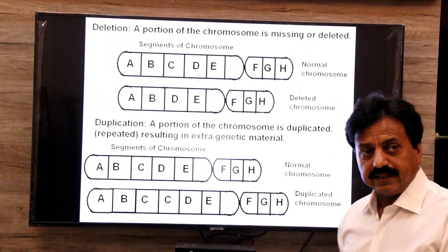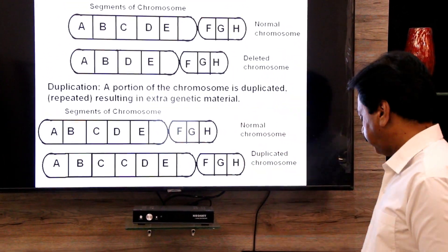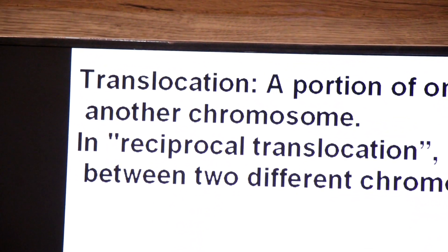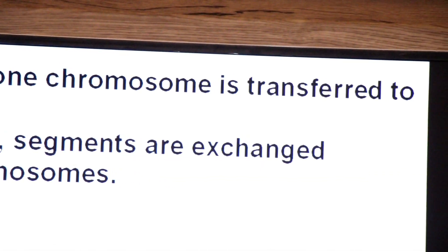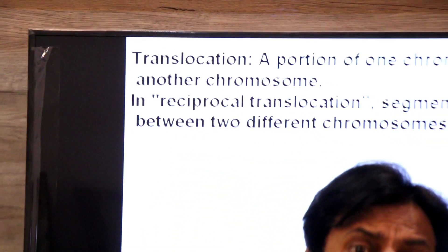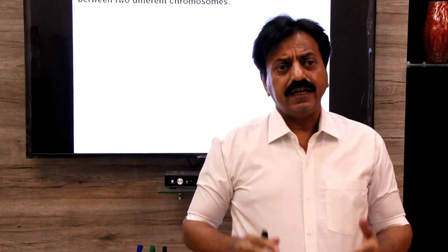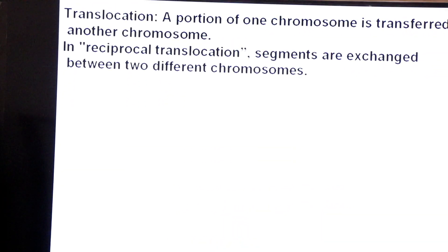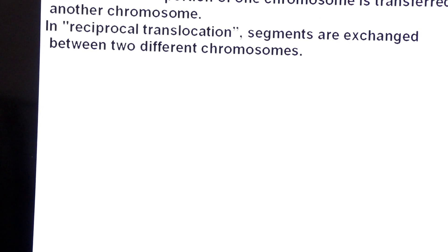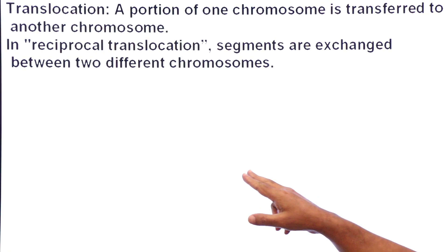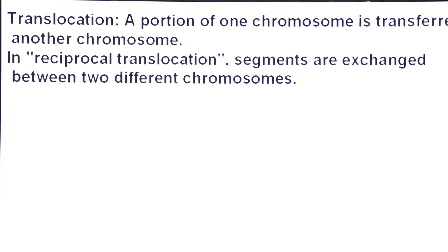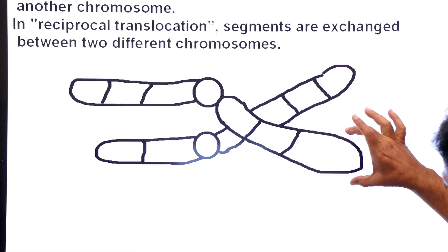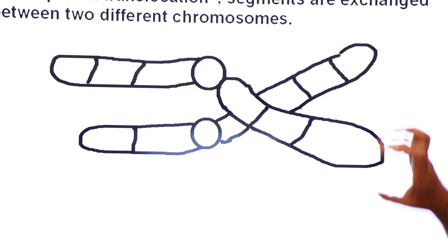In translocation, a segment of one chromosome is transferred to another chromosome. This is called reciprocal translocation. In reciprocal translocation, segments are exchanged between two different chromosomes.